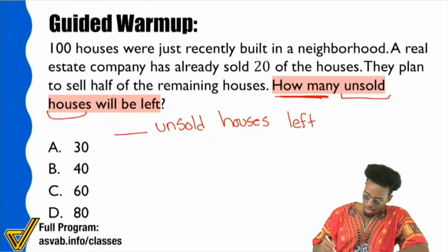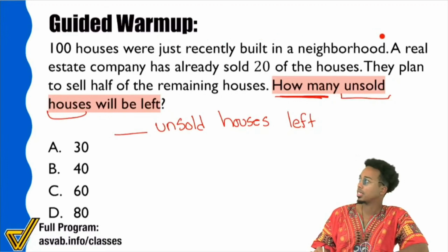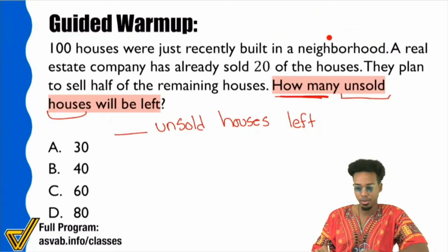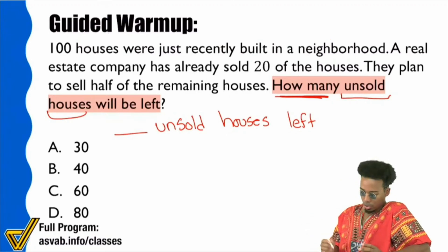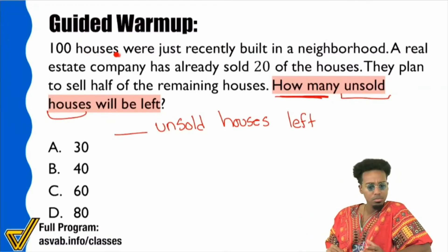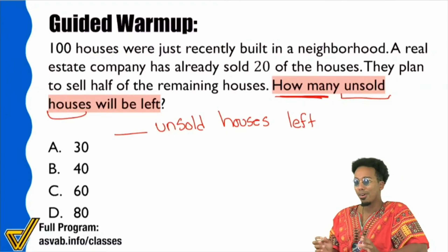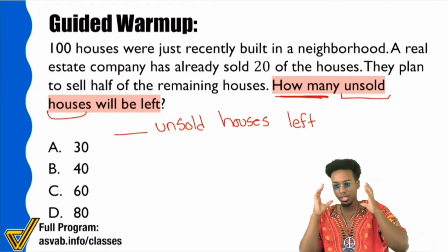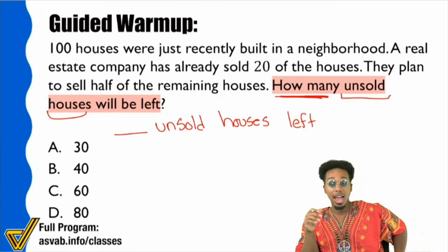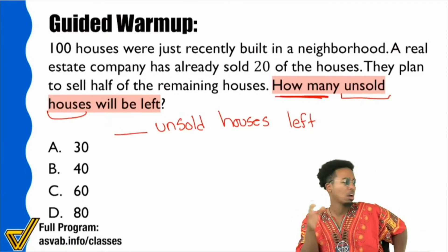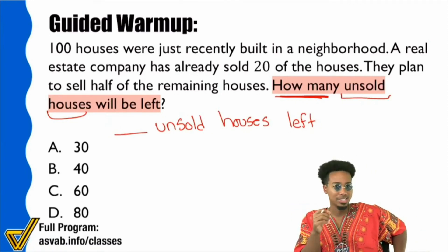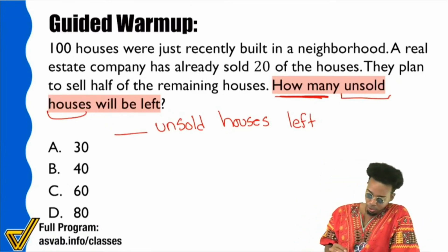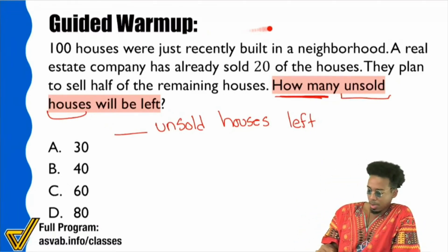Here we go. It says 100 houses were just recently built in a neighborhood. Does that matter yet in terms of talking about unsold houses? Not quite yet. I see that we're talking about houses, but am I able to quantify or actually figure out if I need that right now? No. So it's okay to read past that for right now — some houses got built, sure.